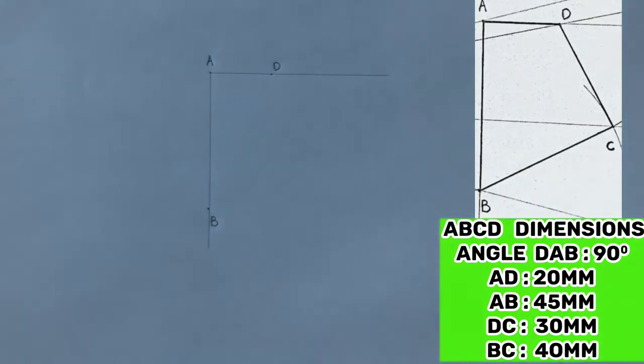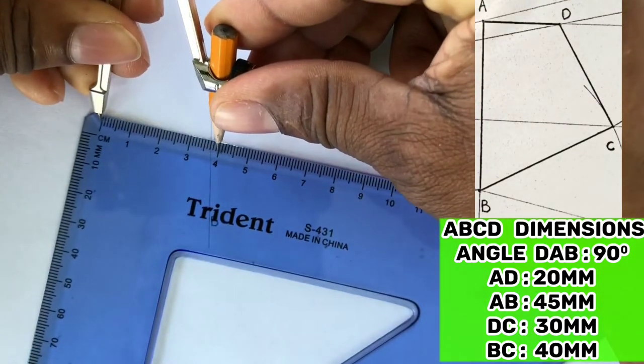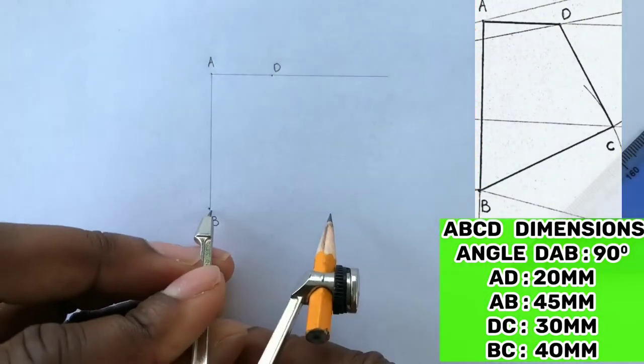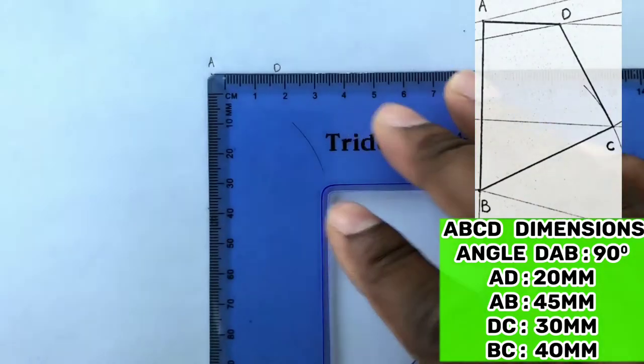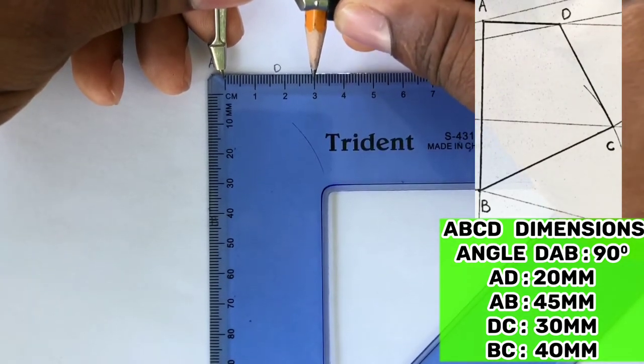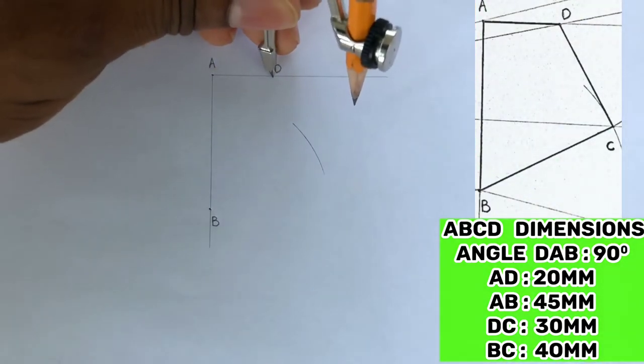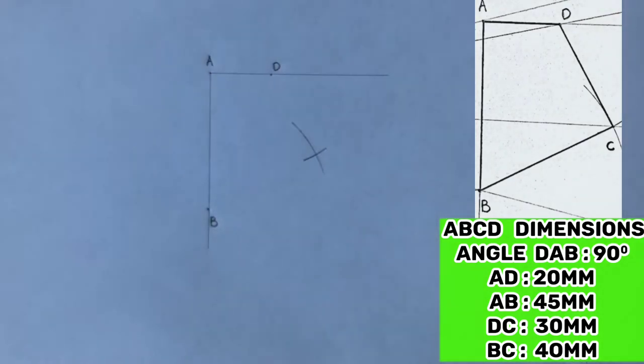Now in order to get point C, you must now swing two arcs. Open your compass to a radius of 40 millimeters and using B as the center and radius 40, draw an arc. Also open your compass to a radius of 30 millimeters and using D as the center and radius 30, draw an arc to intersect the previous arc. Identify and label this intersection as point C.